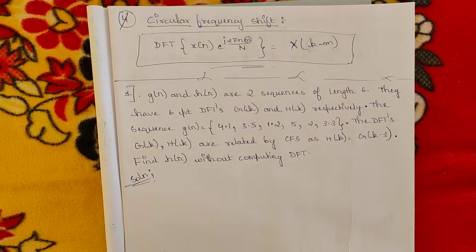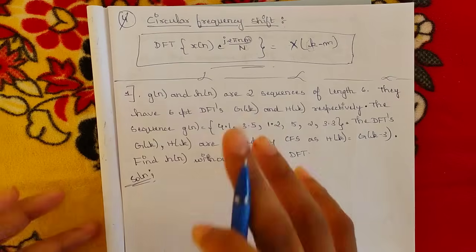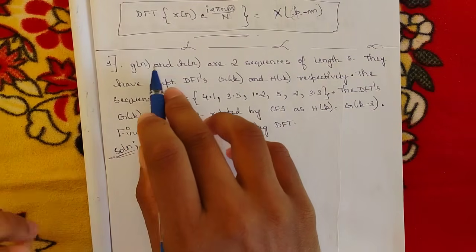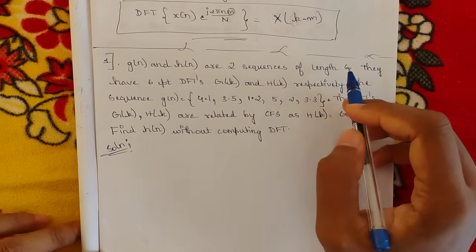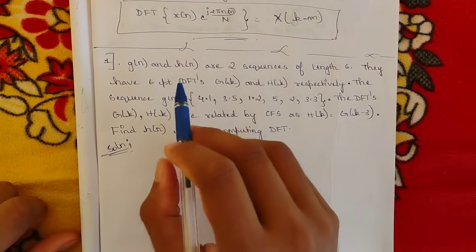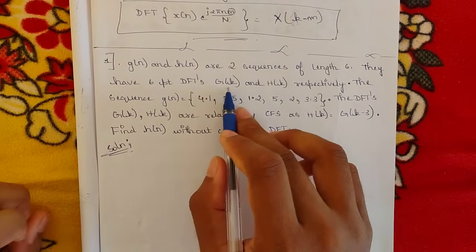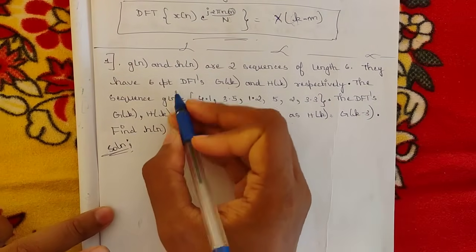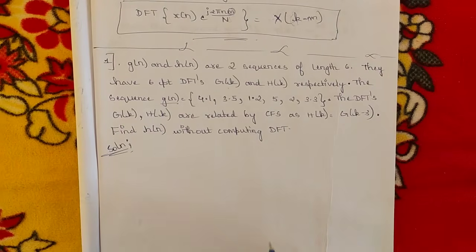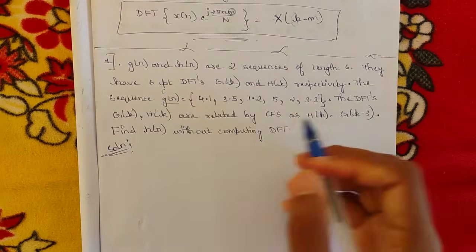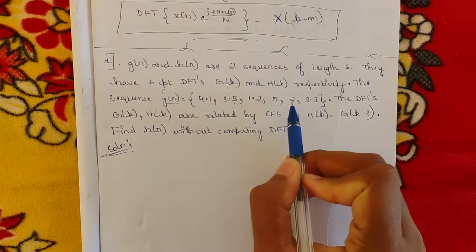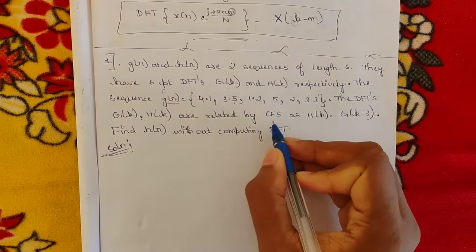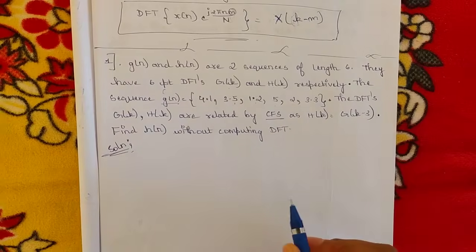This is one change you need to remember when analyzing the question. Now let's look at an example to understand circular frequency shift. The question gives two sequences g(n) and h(n) of length six, so they have six-point DFTs G(k) and H(k) respectively. The sequence g(n) is given as: 4.1, 3.5, 1.25, 2, 3.3 — a six-point DFT.